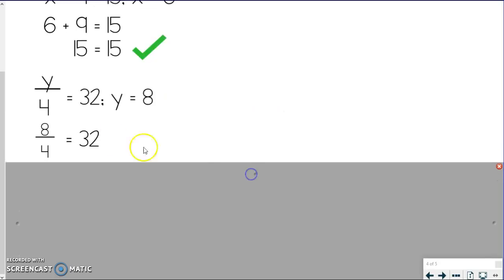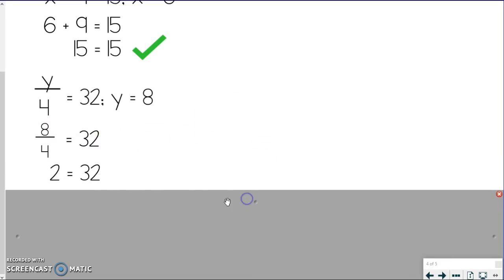So let's see if this will work for this one. So we substitute 8 in first. So we have 8 divided by 4 equals 32. And if I do 8 divided by 4, I get 2. So that means 8 is not a solution for the equation because we did not get the same number on both sides. So we can just put an x, you can put no, or you can put a slash through the equal sign, whatever you want.